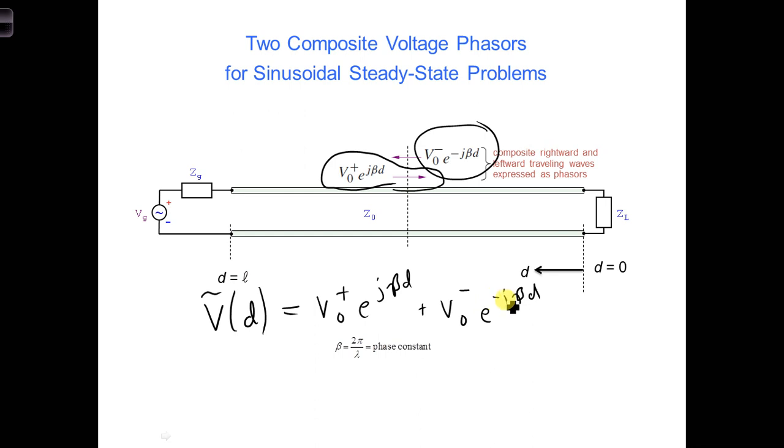That minus sign gives it the direction that is going towards the generator, in the positive D direction.